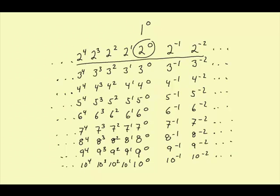Then we're going 2 to the first, which of course would be 2, and 2 squared, which would be 4, and 2 to the third, which would be 8, and 2 to the fourth, which would be 16.